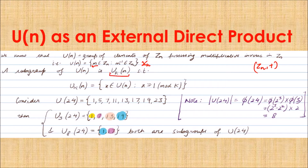This is a subgroup of U(n). U_k(n), where k is written in the subscript, is the set of elements of U(n) which when divided by k gives remainder 1. The mathematical equation representing this is x ≡ 1 mod k.